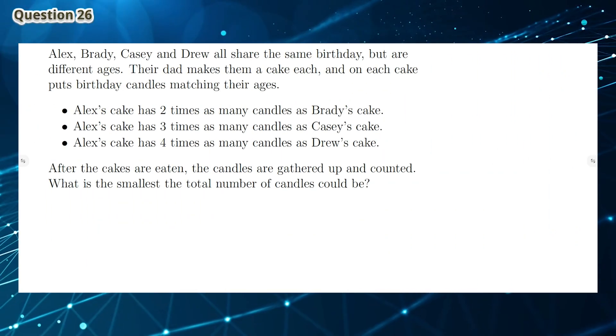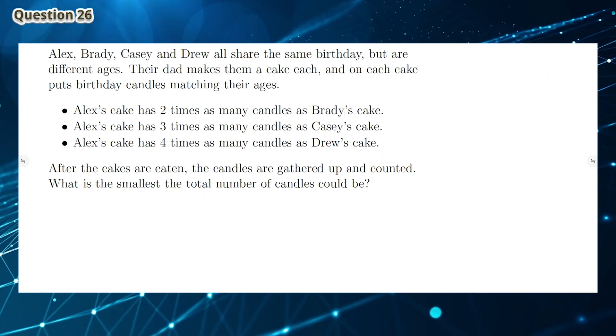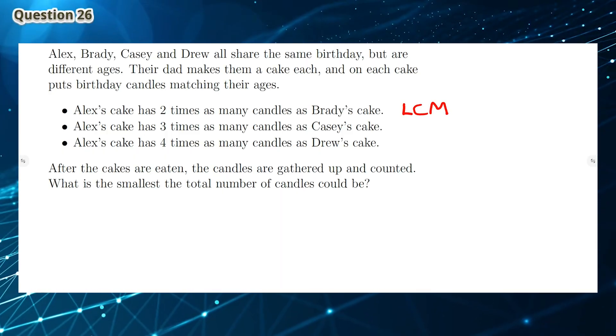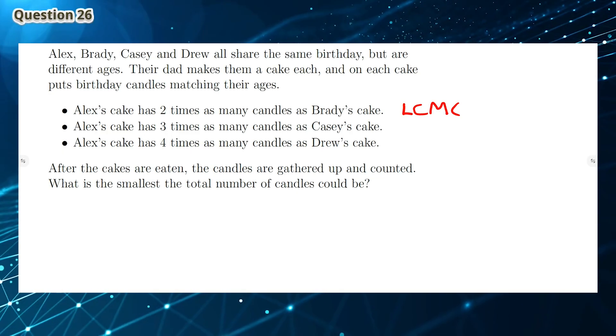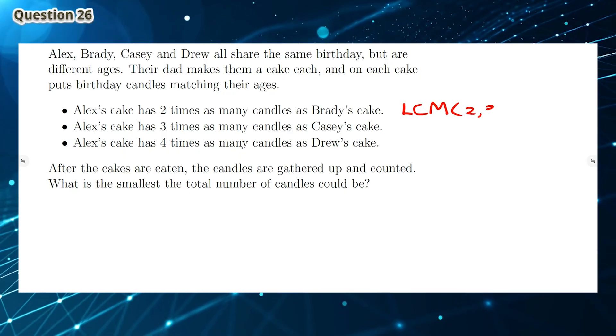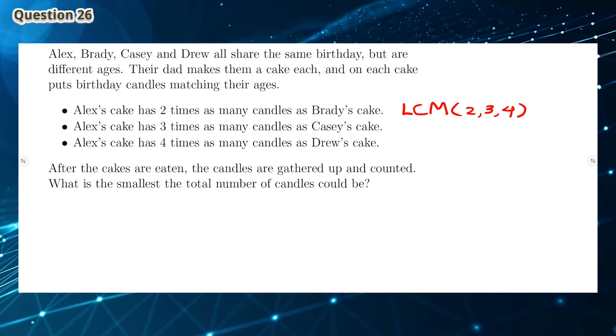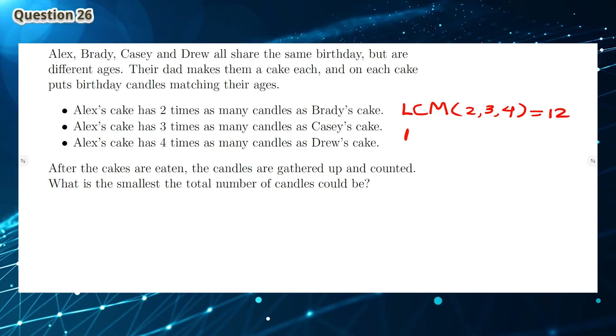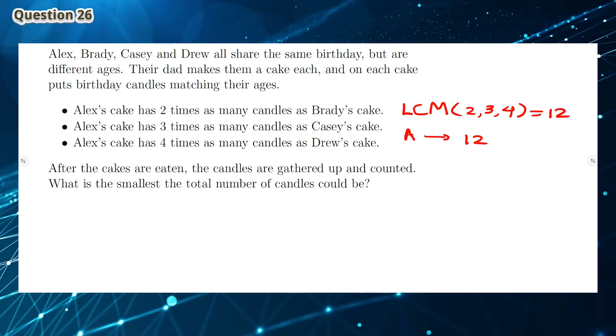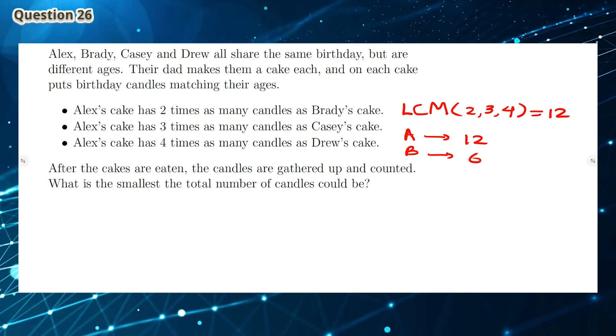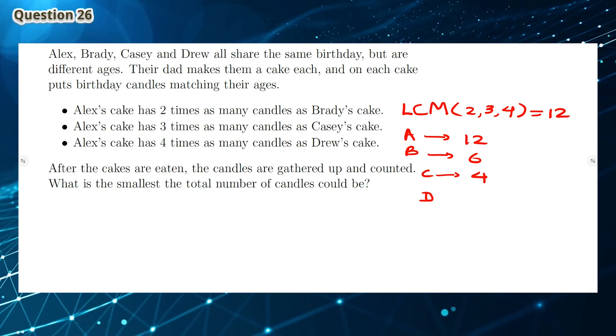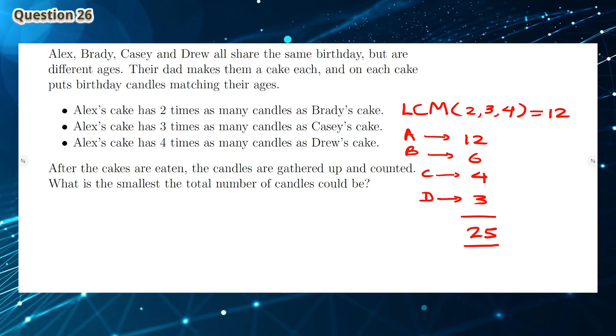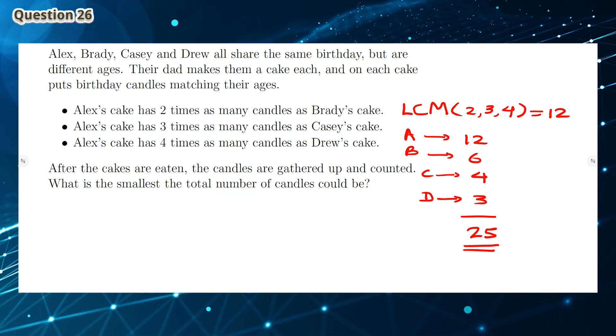Question 26: To get the smallest number of total candles, we have to find the lowest common multiple. This means the number of candles in Alex's cake is divisible by 2, 3, and 4, but it's as small as possible. This number is 12 candles. So Alex has 12 candles, Brady has 6, Casey has 4, and Drew has 3. If you add all of them up, we get 25. So 25 is the smallest number of total candles.